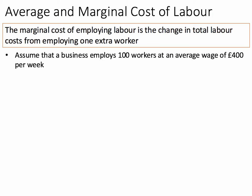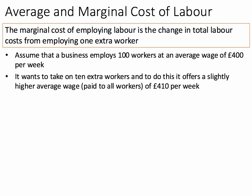Let's assume that the business is currently employing 100 workers at an average wage of £400 per week. It wants to take on an extra 10 workers — perhaps demand has increased — and to do this it has to offer a slightly higher average wage, paid to all workers, of £410 per week. So if they bid up the average wage by £10, they're hoping to pick up an extra 10 workers.